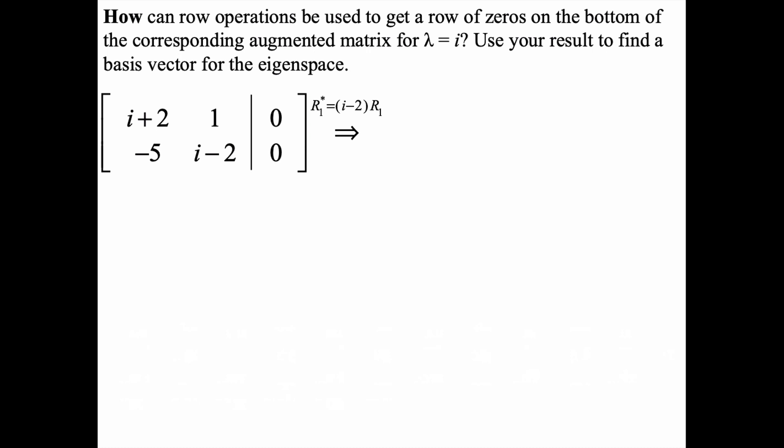We want to look carefully and see how row operations can be used to get a row of zeros on the bottom of this augmented matrix, which represents that linear system for when lambda equals i. We want to use the result to find the basis for the eigenspace. I started you off here using a little code. The new row 1 we're going to create is the expression i minus 2 times the original row 1. If I multiply the first row by i minus 2, then I'll get an i minus 2 over here, and I can make a zero underneath happen because these two will match.